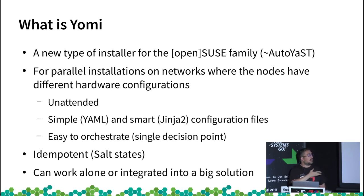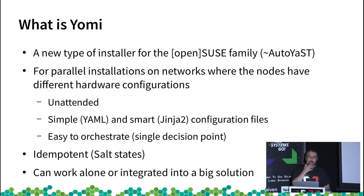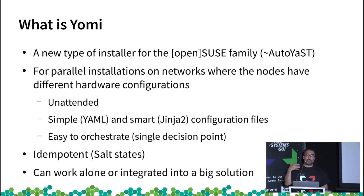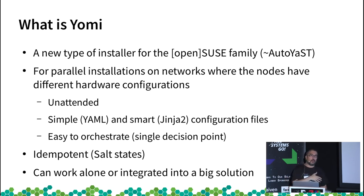Of course it needs to be unattended — if you have multiple nodes, you don't want to take care of them manually. That means you need some kind of automation, and the system needs to make some choices for you when things are not fully specified.